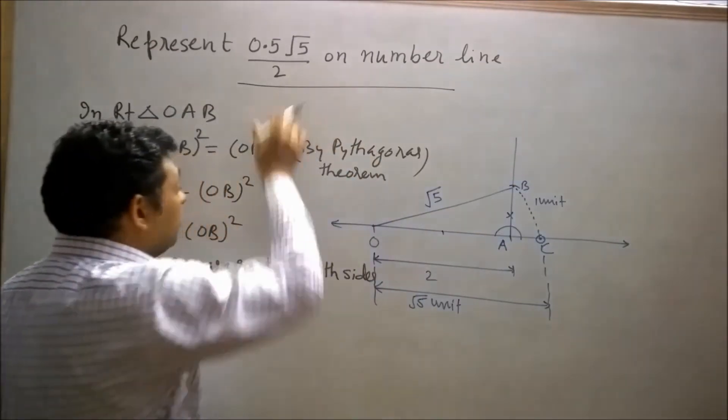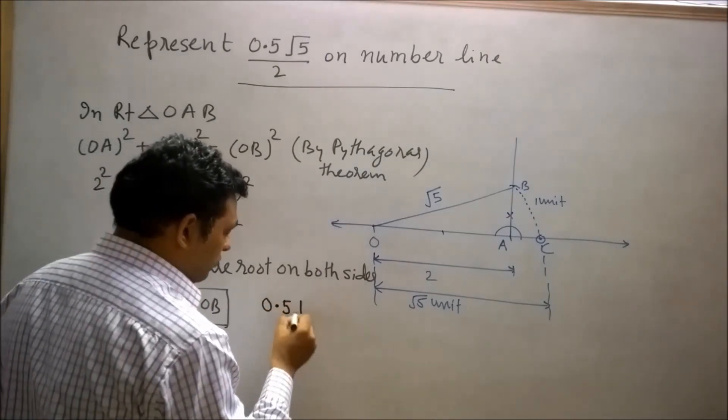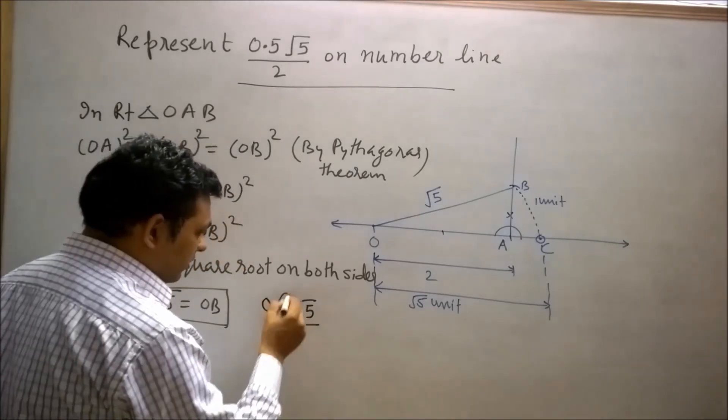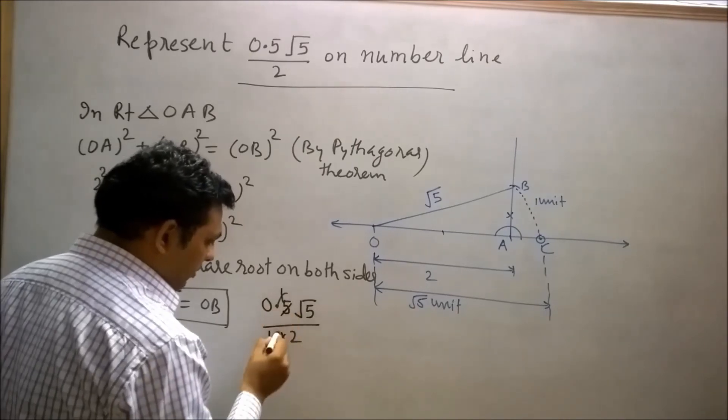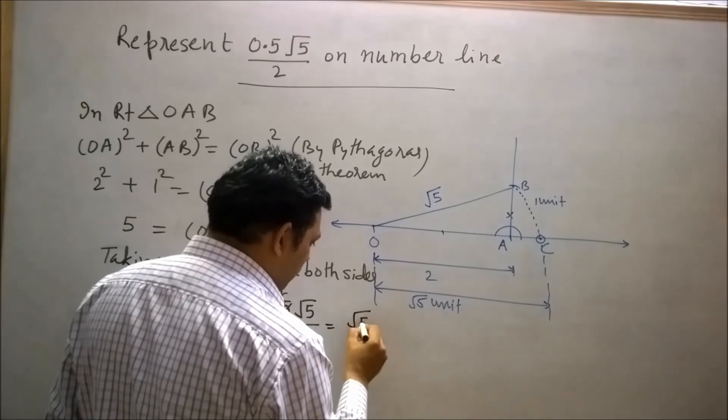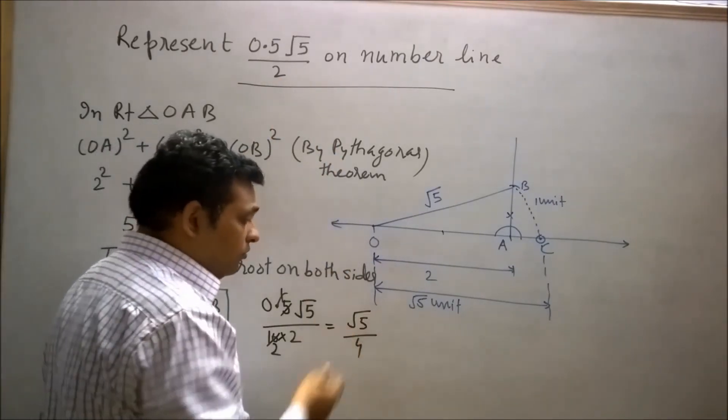Now simplify the given number 0.5√5/2. We can say by removing the decimal, the denominator is multiplied by 10. 5√5/10. So this will be equal to √5/4. Now it means the given number is 1/4 of √5.